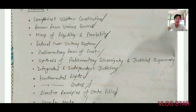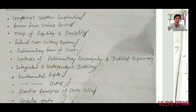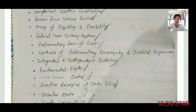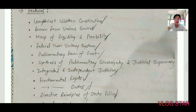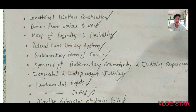As a bag of borrowings, various provisions were taken from different constitutions — for example, the DPSP provision from Ireland, the Parliamentary system from England. The planning system was taken from the USSR. The Constitution is also a mix of rigidity and flexibility: changing the name or border of a state is flexible, but amending the federal structure requires a very rigid procedure.